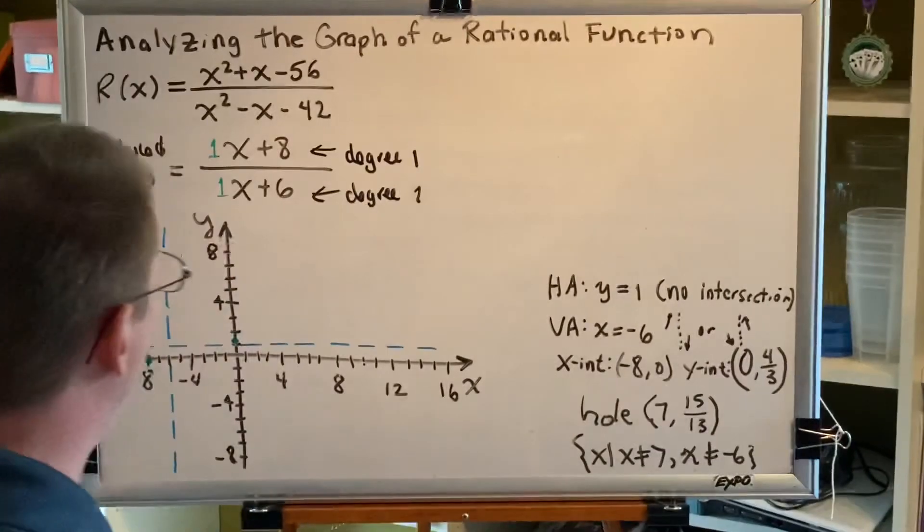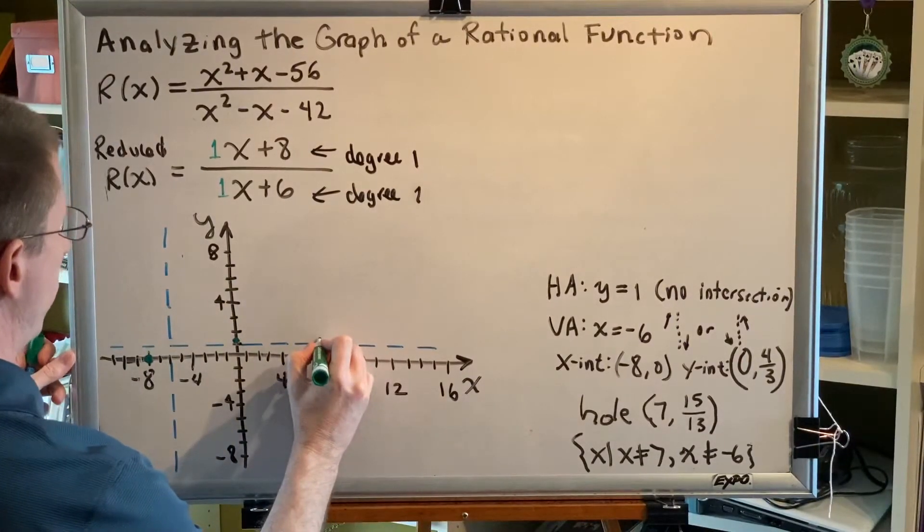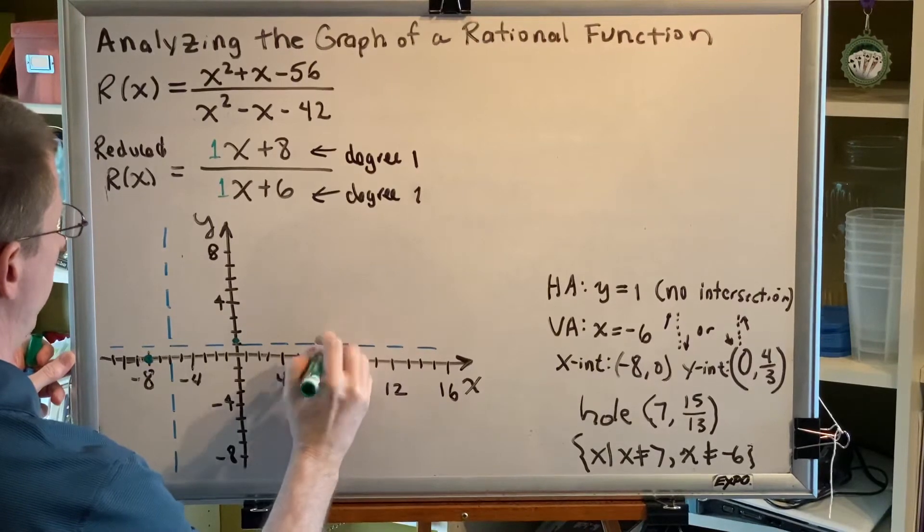Our hole is at 7 comma 15 thirteenths. Again, 15 thirteenths is just a little bit bigger than 1. So here's the location of our hole.